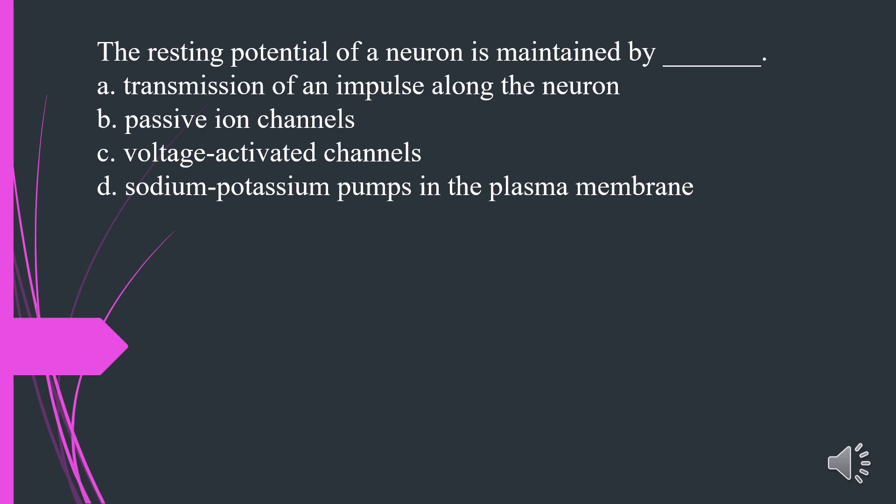The resting potential of a neuron is maintained by what? A. Transmission of an impulse along the neuron. B. Passive ion channels. C. Voltage-activated channels. D. Sodium-potassium pumps in the plasma membrane. The answer is D. Sodium-potassium pumps in the plasma membrane.